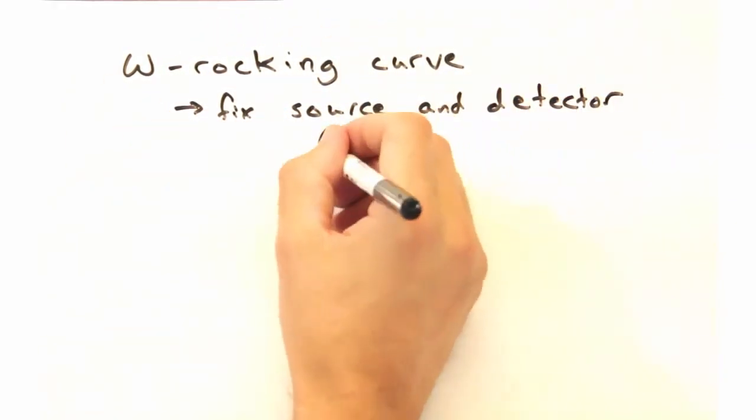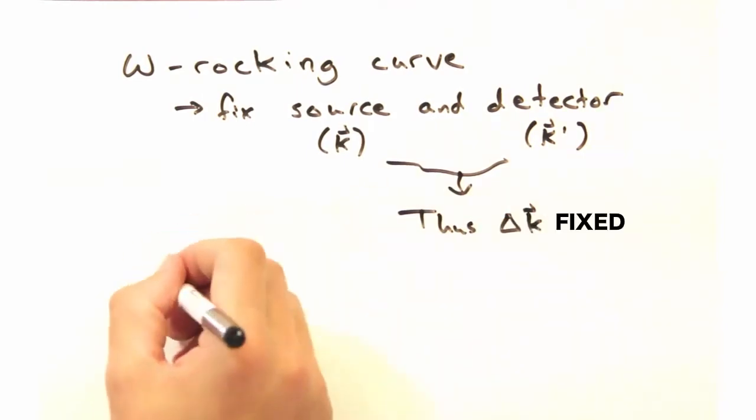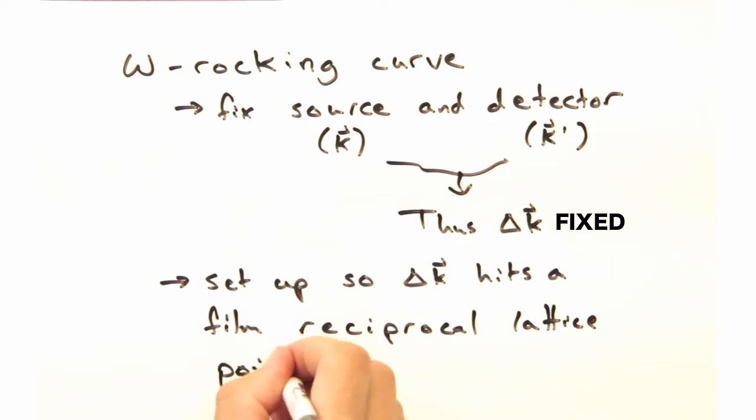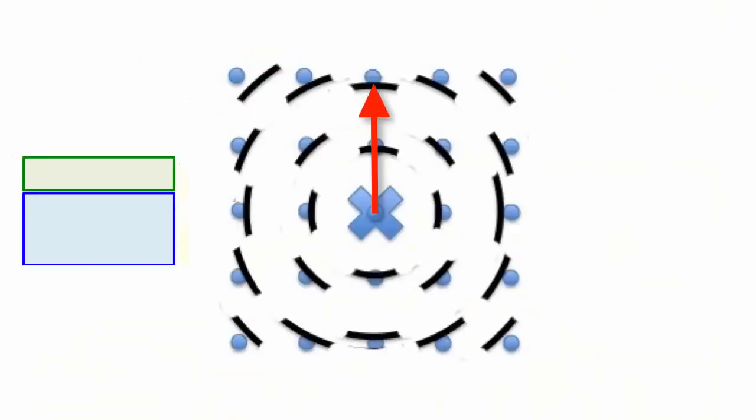For this type of scan, we fix our source and our detector so that our delta k vector never changes. This measurement takes a bit of planning. You want to set up delta k so that it hits one of our sample arcs.